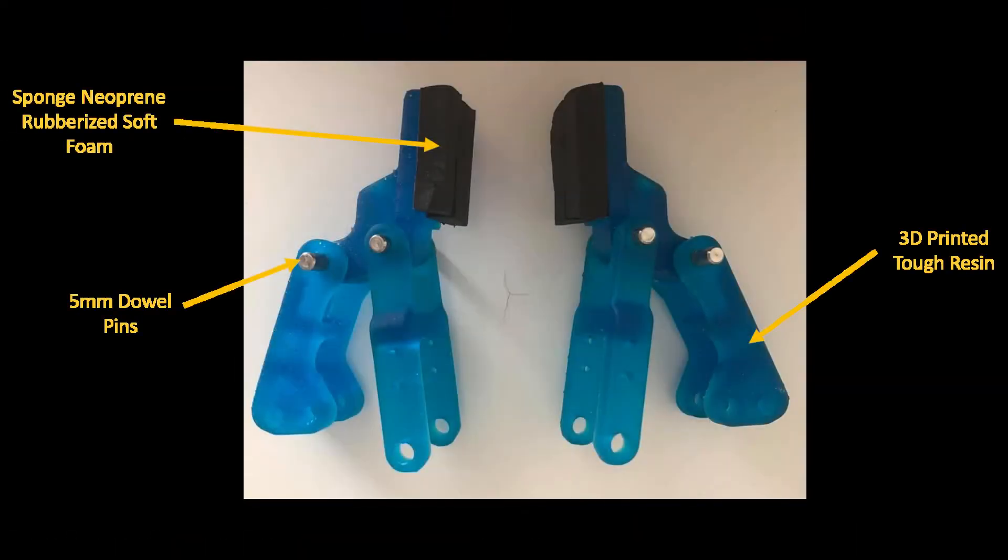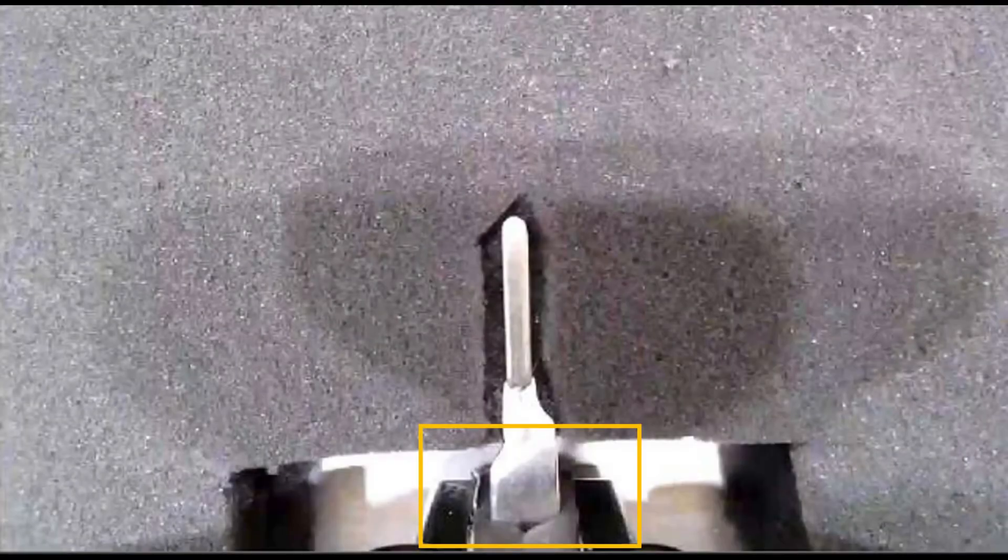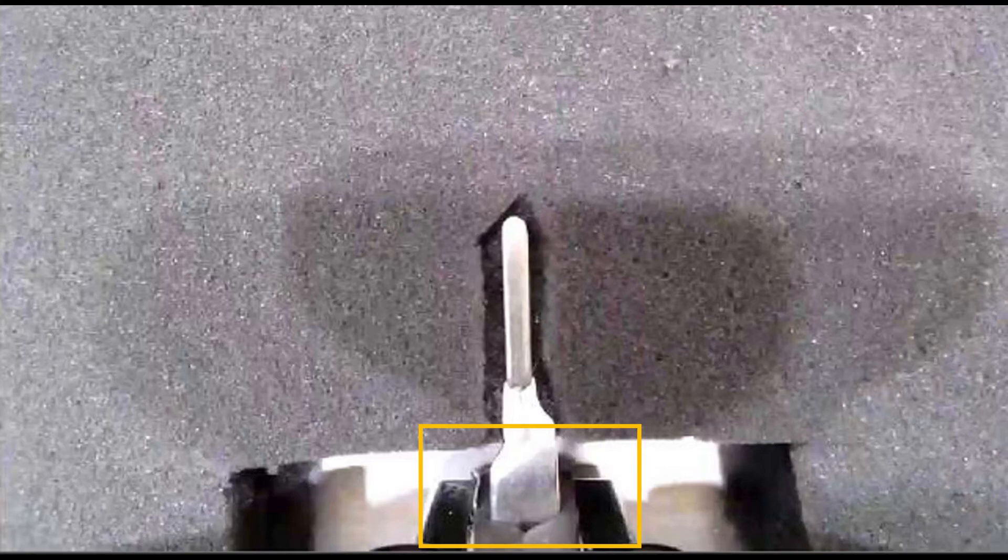For our prototype, we have 3D printed finger links that can be replaced after each surgery. Additionally, to increase the gripper's adaptability to different tool shapes and sizes, rubberized soft foam has been placed on the inside of the finger pads to mold to the tool it is holding.